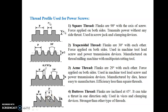The buttress thread can take thrust in one direction only. In square, trapezoidal, and Acme threads, force is applied on both sides. But in buttress thread, due to flanks inclined at 45 degrees, it can take thrust in one direction only. Buttress threads are used in vises and clamping devices, and are stronger than other thread types.